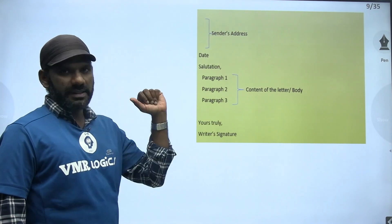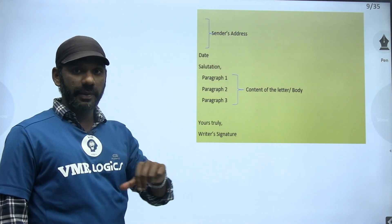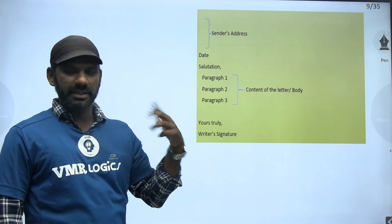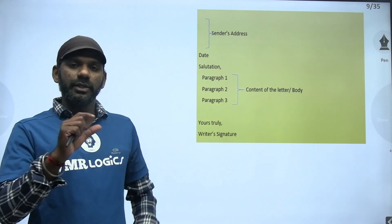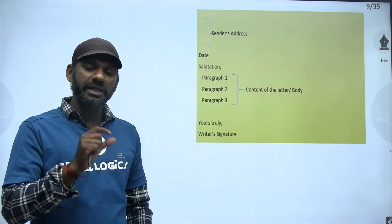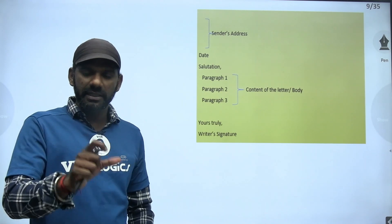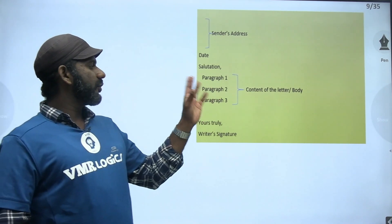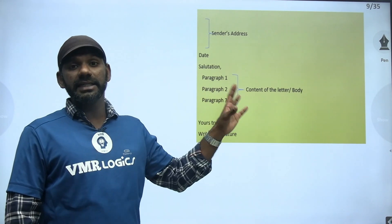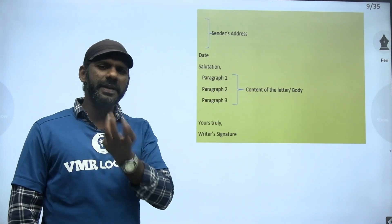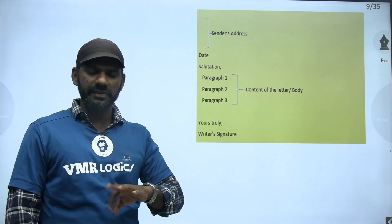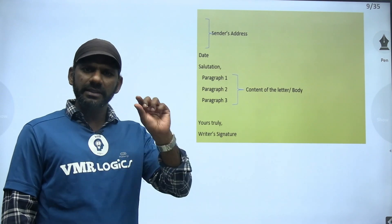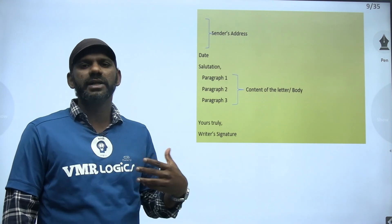Sender's address — there's no comma required after every line in the address. Then date. Then salutation — you can go for anything, but don't write 'dear friend.' Don't mention the word 'friend' there; instead mention the name of the friend: Dear Ram, Dear Sam, Dear Rahul. Salutation comma. Then paragraph 1, paragraph 2, paragraph 3 — the content of the letter. It's better to go for the letter in 3 paragraphs — formal or informal — make them 3 short paragraphs depending on the number of words required.